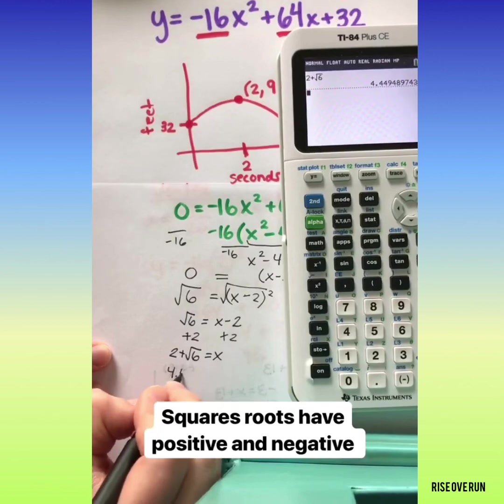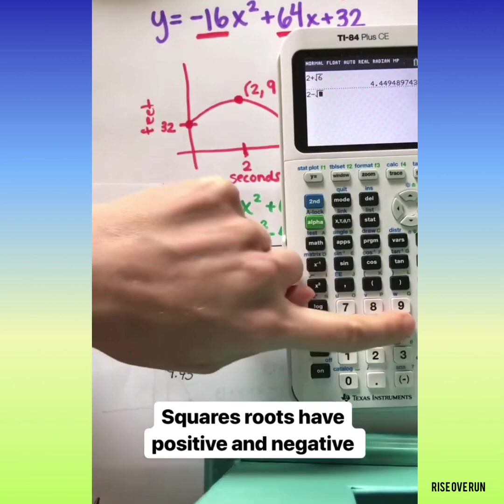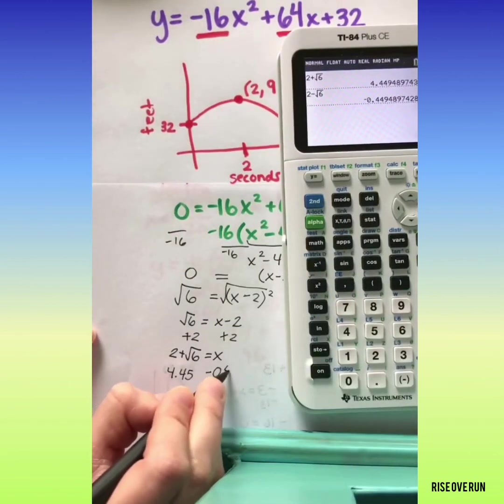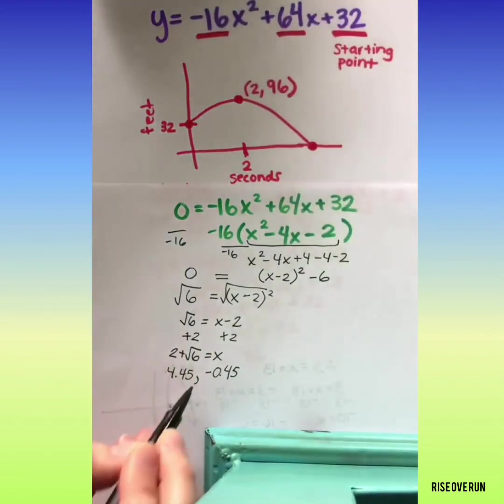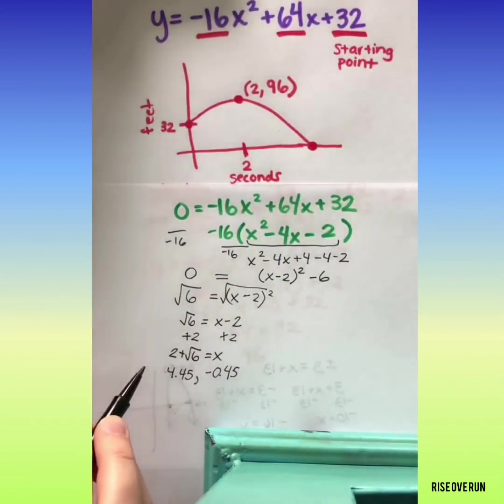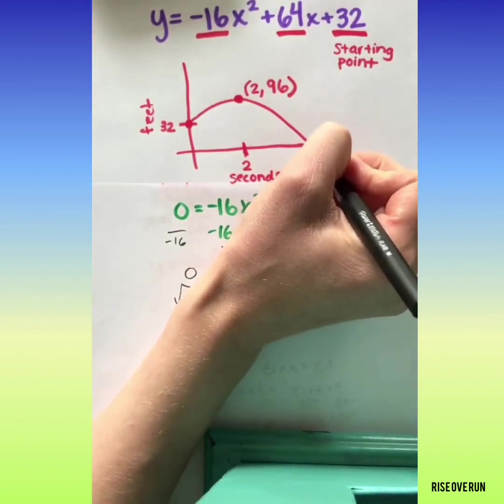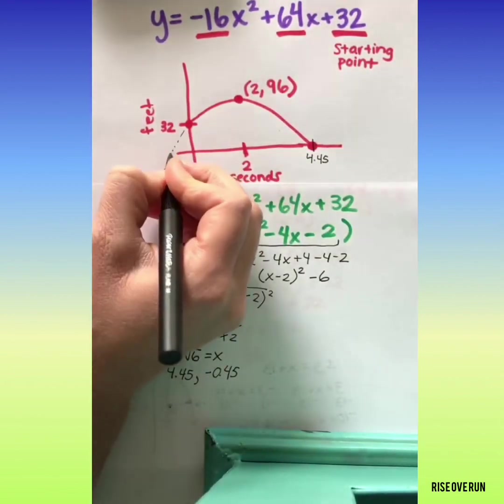That's 4.45, and then let's also do 2 minus the square root of 6, which is negative 0.45. So let's locate these two zeros on our graph up here. 4.45 is this location.